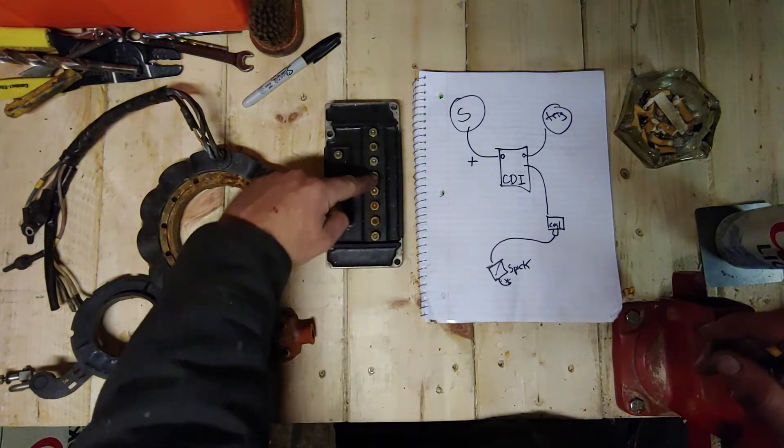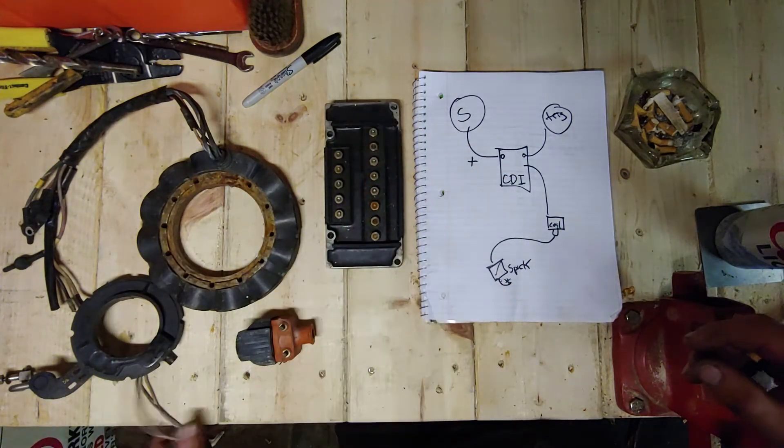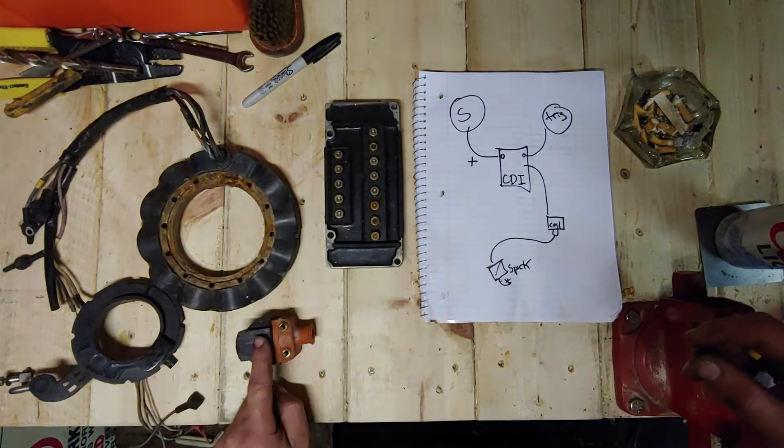This connects to the CDI box in between the coils, and the coils connect in between the trigger wires. So trigger, stator, CDI box, coil. You know how that works.